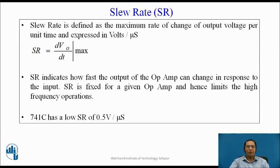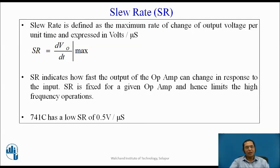The next important parameter is the slew rate, defined as the maximum rate of change of output voltage per unit time, expressed in volts per microsecond. Slew rate = dV0/dt, where V0 is the output voltage. It indicates how fast the output of the op-amp can change in response to the input. For a given operational amplifier, the slew rate is fixed, which puts a limit on the high-frequency signals that can be used with that op-amp. For the popular op-amp 741C, the slew rate is a very low 0.5 volts per microsecond, meaning the output cannot change by more than 0.5 V per microsecond.